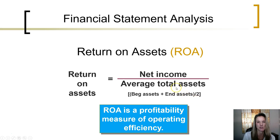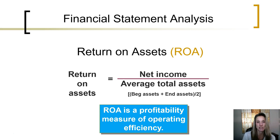That will give us a rough average. If we take the net income and divide by the average total assets, we end up with a percentage called the return on assets. This percentage reflects, for every dollar in assets, what percentage those assets produced in net income.